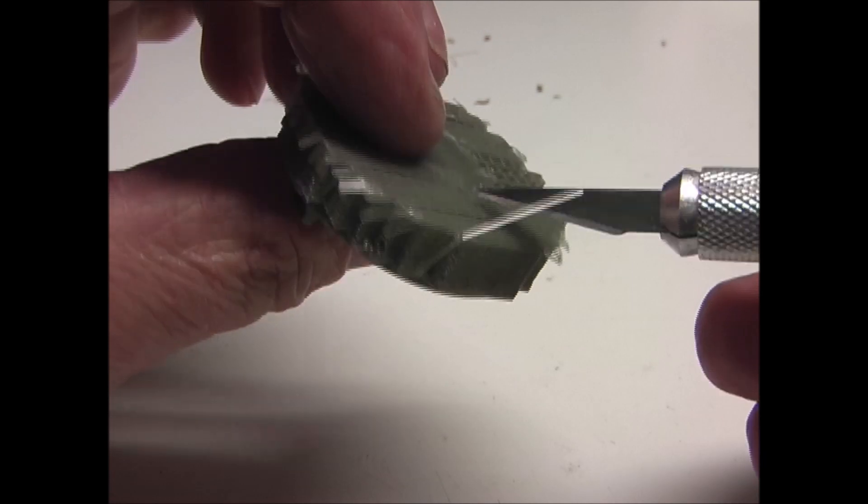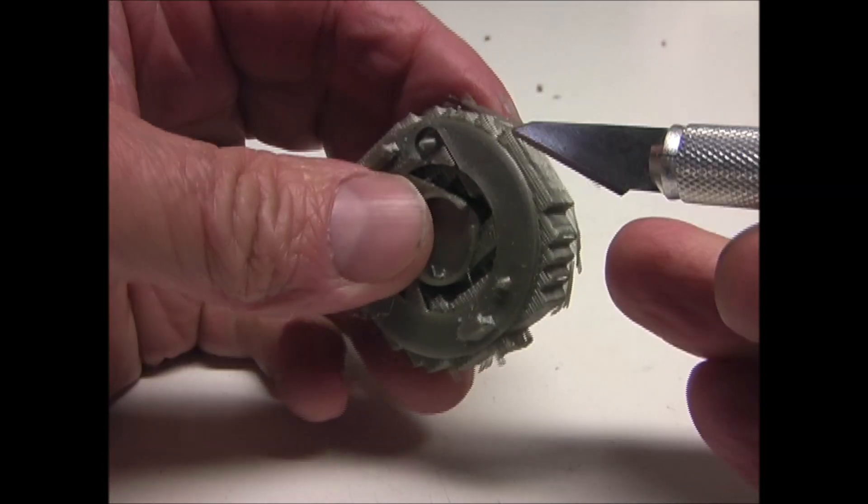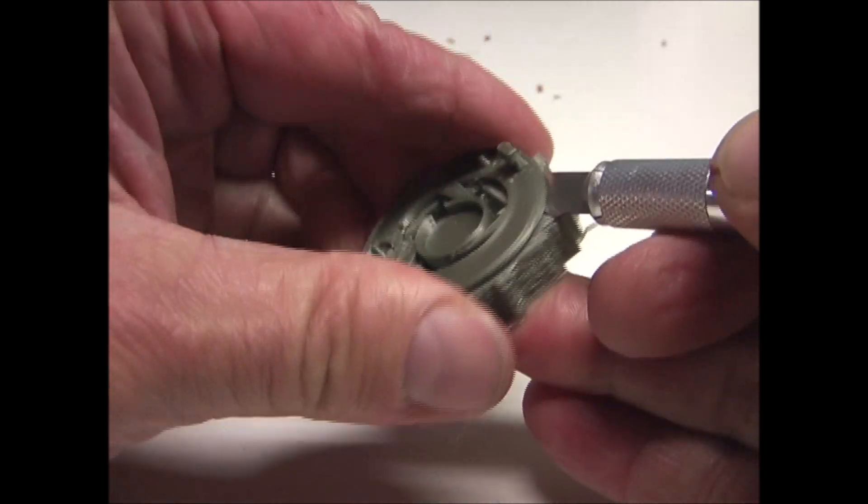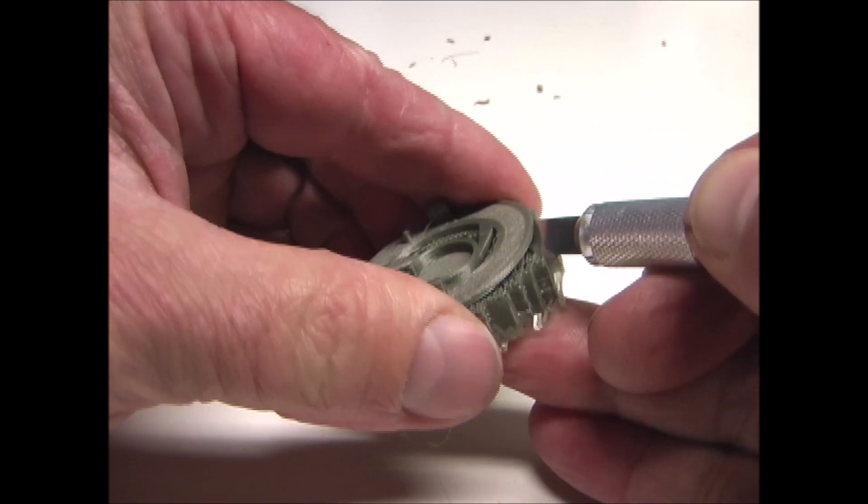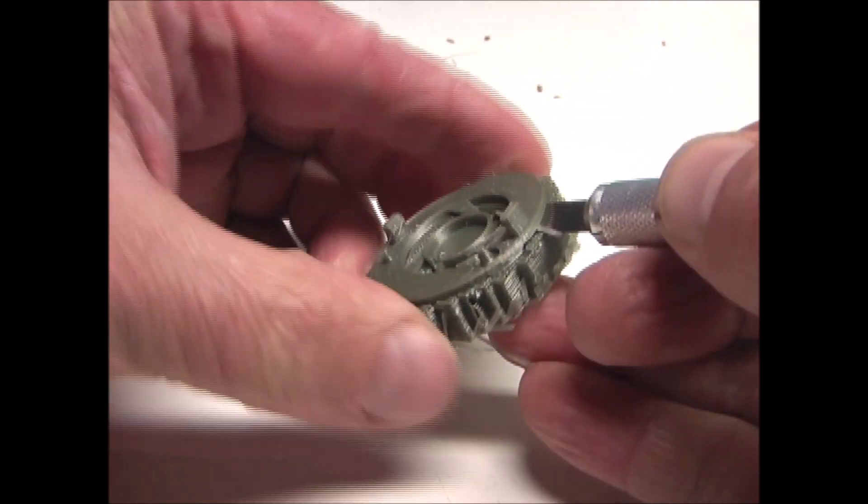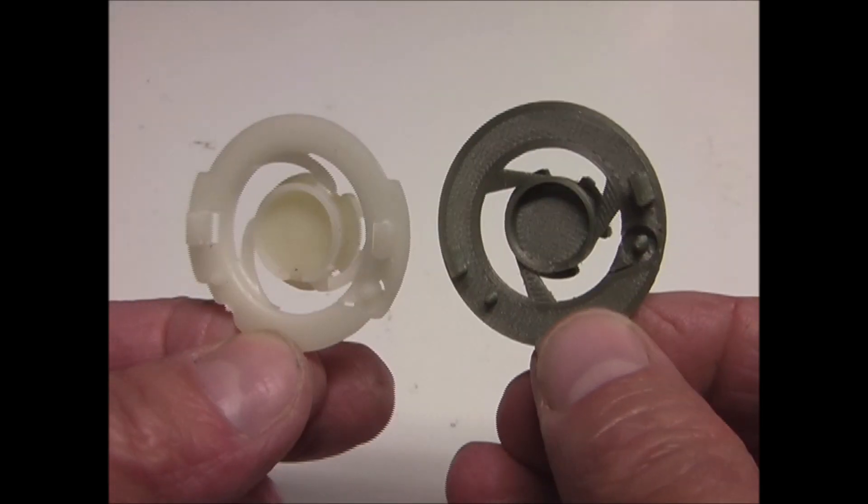And then the support structure needs to be removed from the 3D printed part. And this can be kind of tedious to do. Especially on a part that's somewhat fragile like this. And now, in less than an hour, I have a replacement part.